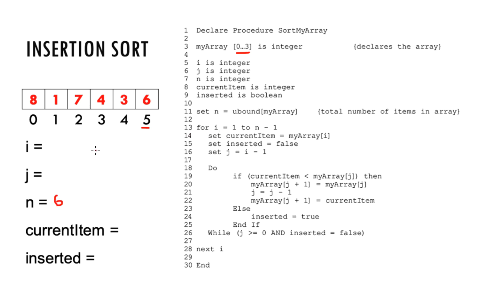On line 13 there's a for loop: for i equals one to n minus one, which is five. That takes us from the second element all the way up to the last element in the list. Entering the for loop, we set the current item to equal the array at position i. i is one, so the value at position one is one — current item is assigned one. Then we set inserted to equal false, and j to equal i minus one, so j gets the value of zero. Then we have a do-while loop.